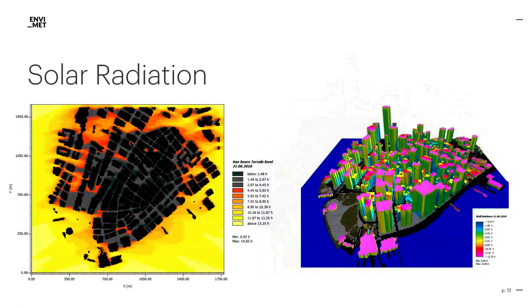And indeed, for most parts of Manhattan, we will find only a few sun hours during the longest day of the northern hemisphere at the 21st of June. When we again have a look at the output in 3D, we can observe that most roofs are hit by the maximum amount of radiation for that day, while parts of wall facades are shaded by the skyscrapers next to them.